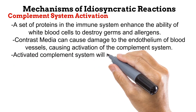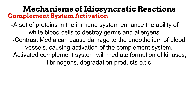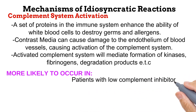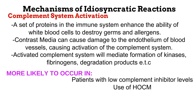When the complement system is activated, it mediates the formation of chemicals like kinins, fibrinogens, and degradation products. These chemicals also cause inflammatory reactions like histamine. The complement system is normally in an inactive state because of certain chemicals called complement system inhibitors. An example is the C1 inhibitor, which helps to prevent the complement system from being unnecessarily activated. This is why idiosyncratic reactions due to complement system activation occur more often in patients with a low level of complement system inhibitors. Also, because high osmolar contrast media is more likely than low osmolar to damage the endothelium of blood vessels, more complement system-related reactions occur with high osmolar contrast media use.